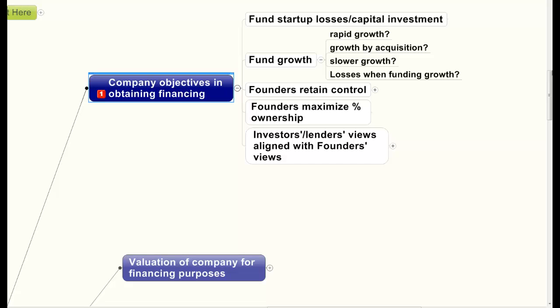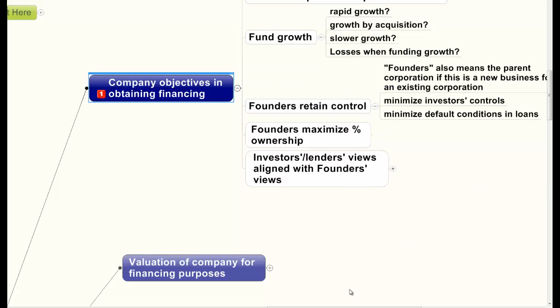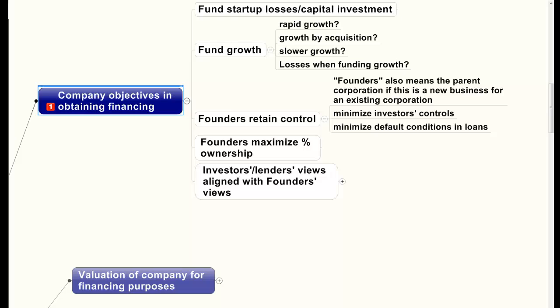The number one aspect that founders have in obtaining financing is to retain control — you would think it's valuation, which is a close second, but it is to retain control. It's understandable. For purposes of our lectures here, I want you to equate founders also to a parent corporation that's going to start an operation through a subsidiary — the concepts are still the same.